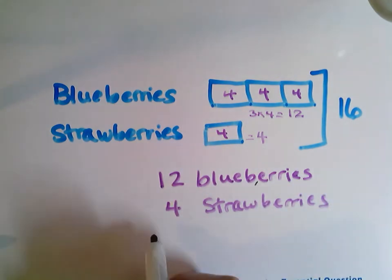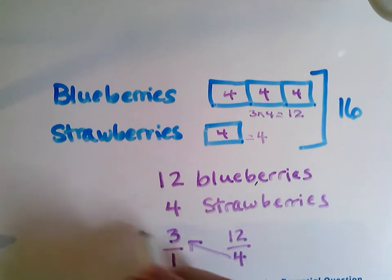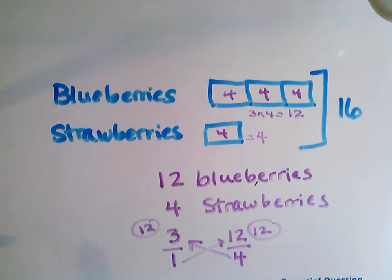And I can check and see if this ratio is equivalent. I can have three to one. That was my original ratio. And I have 12 to four. And let's double check. Let's multiply this way. Four times three is 12. And we'll multiply this way. One times 12 is 12. My ratios are equivalent.